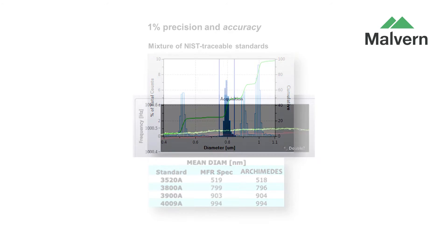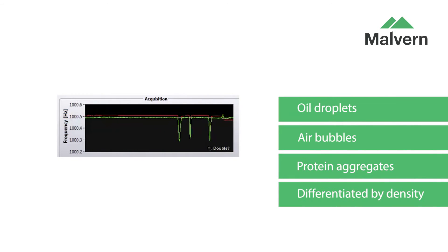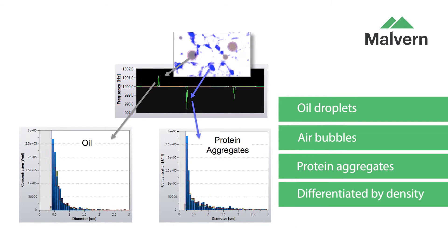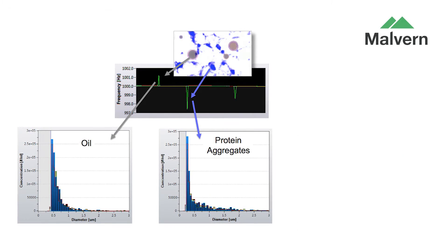Protein aggregates aren't the only material Archimedes can analyze. The instrument can count and measure particles of most types, including perhaps most interestingly silicon oil droplets and air bubbles. The underlying principle of the measurement method means that such particles are completely distinguishable from protein aggregates within the same sample.